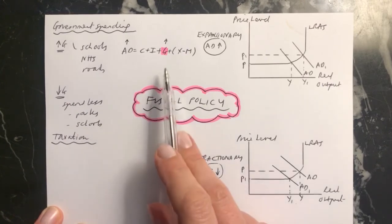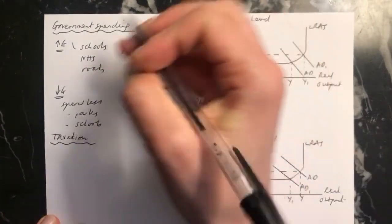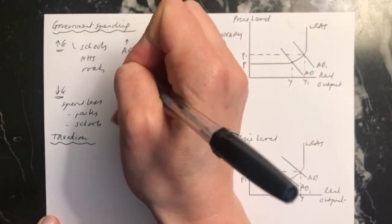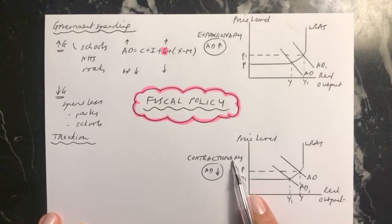and, again, ceteris paribus were government spending to come down, then that would cause AD to also come down. And that would be a form of contractionary fiscal policy, which is down here, where aggregate demand comes down.